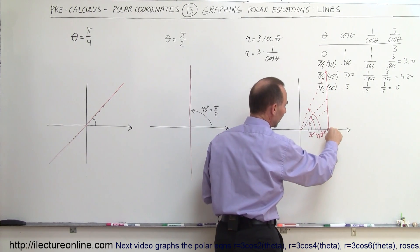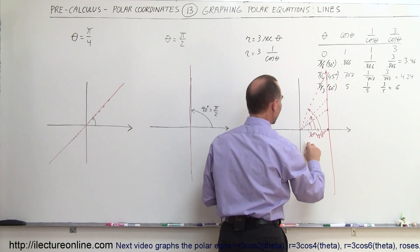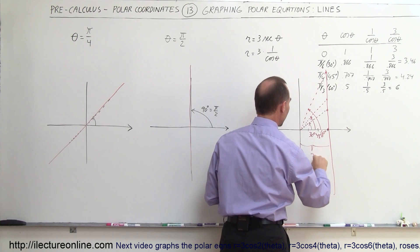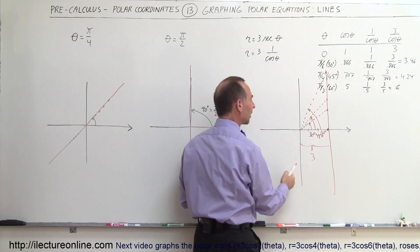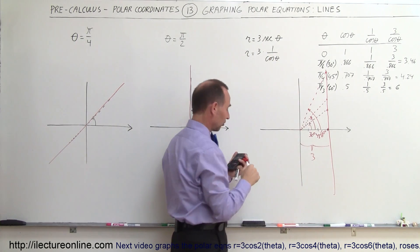And then if we use negative angles, we get the same thing on the other side. So you can see that this forms a straight line that is a distance 3 units away from the vertical axis.